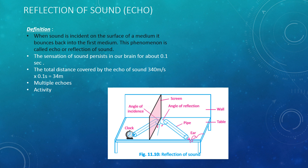The first topic is the reflection of sound, which is also called echo. Its definition is: when sound is incident on the surface of a medium, it bounces back into the first medium. This phenomenon is called echo or reflection of sound. The concept of reflection of sound is the same as light reflection. The first medium means air, for example, and the incident surface can be a solid or a liquid. So there should be two media in order to have reflection of sound.